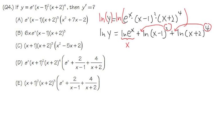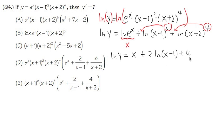So now we can write: ln y equals x, and then the 2 goes to the front giving plus 2 ln of x minus 1, and the 4 goes to the front giving plus 4 ln of x plus 2. Now we are ready to take the derivative, because we've broken the product into sums, and it's fairly easy to differentiate from here.